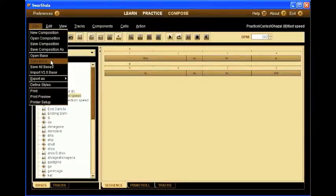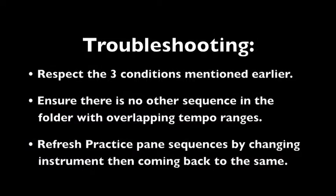Now if you face any problem with this, there is a little troubleshooting. First of all, respect the three conditions we mentioned earlier. Secondly, ensure there is no other sequence in the folder with overlapping tempo ranges, because otherwise that sequence may be selected first and yours will be ignored. And then refresh the practice pane sequences by changing the instrument and then coming back to the same — this refreshes the cycles for that instrument.